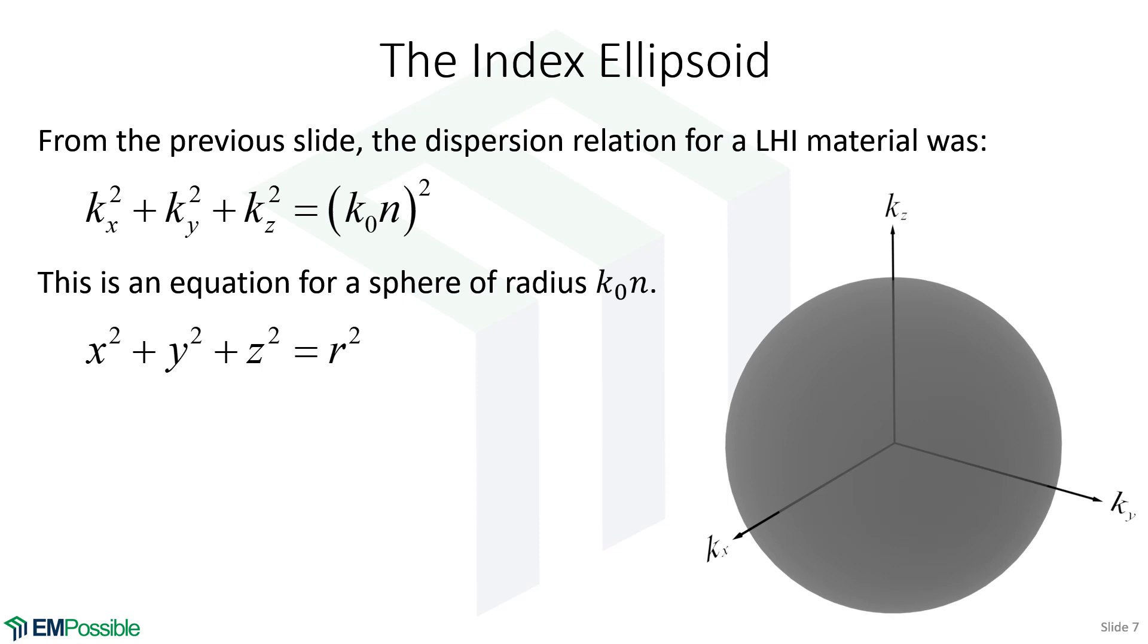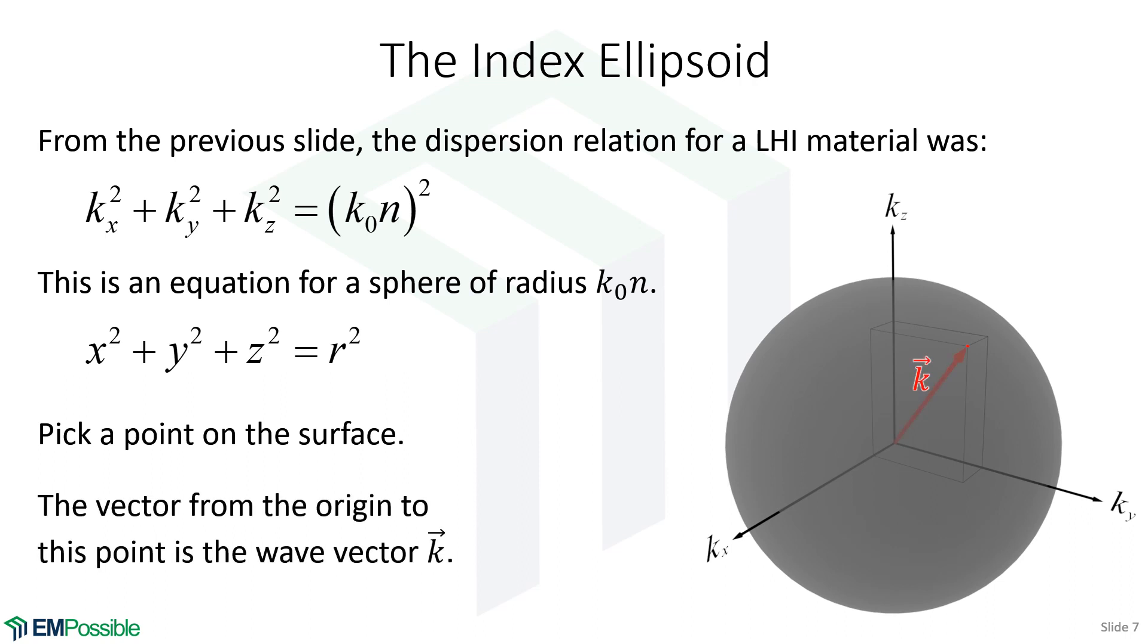So given this k surface, let's pick a point. And so we pick this point right here. The next thing we'll do is we'll come up with a vector that extends from the origin to that point. That will be our wave vector. And so in this case, this k surface maps out all of the possible magnitudes of k as a function of direction. Well, this is a sphere. That tells us inside of a linear, homogeneous isotropic material, no matter what direction a wave is trying to go inside that material, it always sees that same magnitude wave vector. And that makes sense.